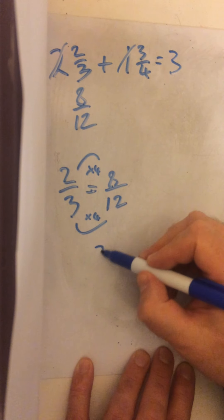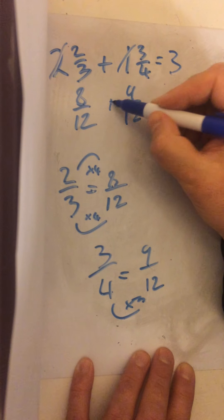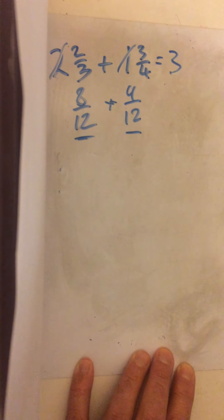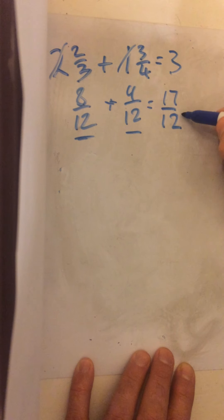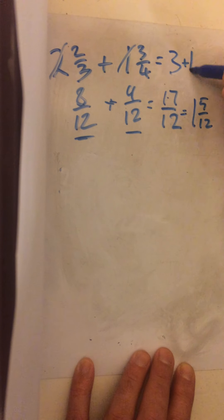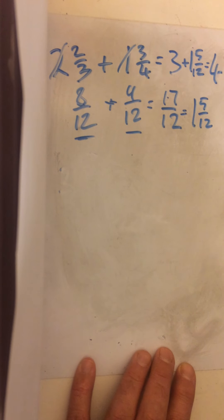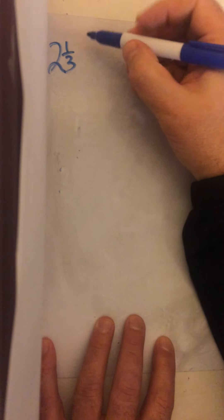Times by four, times by four, so two-thirds becomes eight twelfths. And three-quarters — times by three — becomes nine twelfths. Now we add those up. That's why we find the common denominator: adding fractions is easy when the denominators are the same. Eight twelfths plus nine twelfths is seventeen over twelve. We convert that improper fraction to a mixed number: one and five twelfths. Adding that to the whole numbers gives us four and five twelfths.